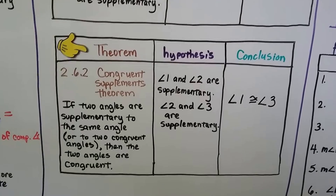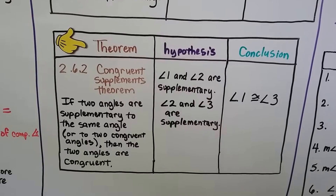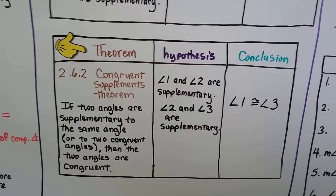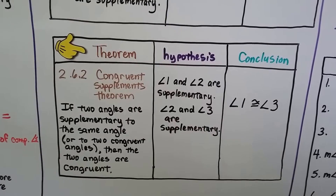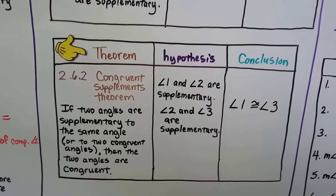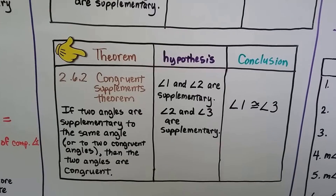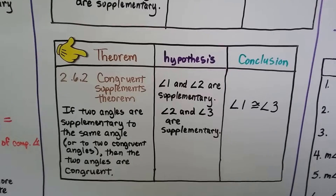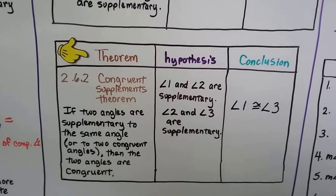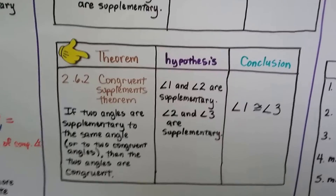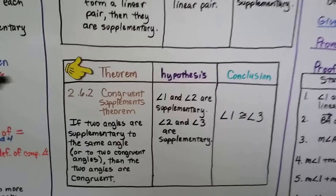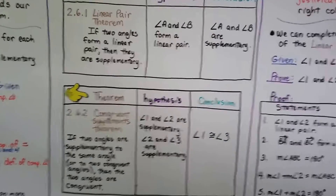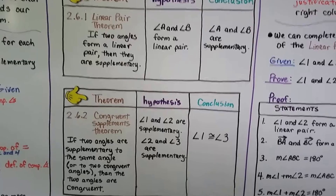We have another theorem, 2.6.2 — the Congruent Supplements Theorem. It says if two angles are supplementary to the same angle, or to two congruent angles, then the two angles are congruent. Our hypothesis is: angle 1 and angle 2 are supplementary, and angle 2 and angle 3 are supplementary — so our conclusion is that angle 1 and angle 3 must be congruent. It's really important that you have these at your fingertips in your notes because you're going to use these a lot in two-column proofs.